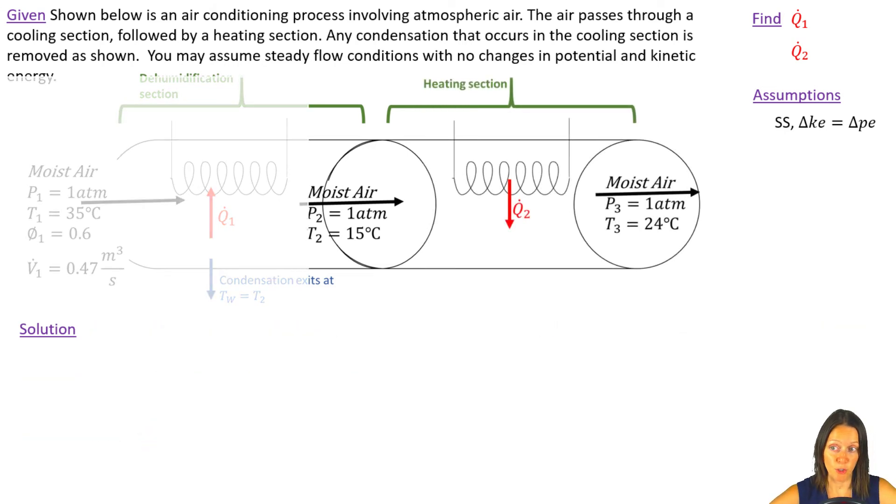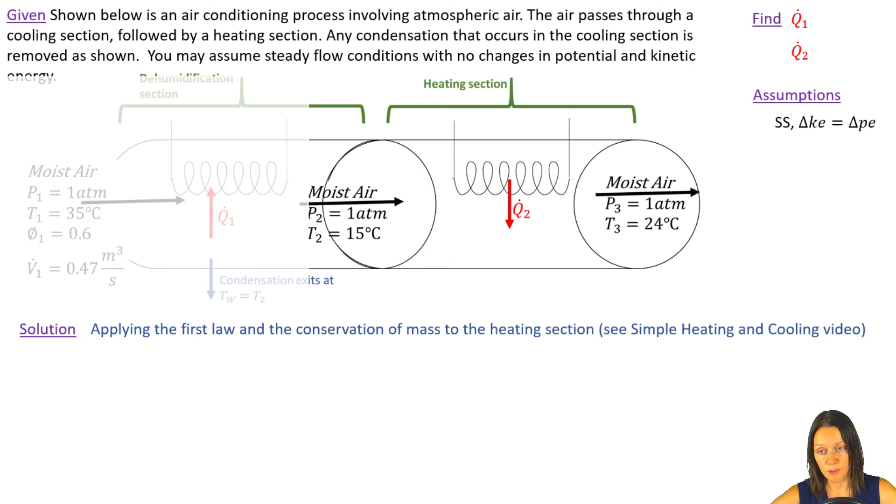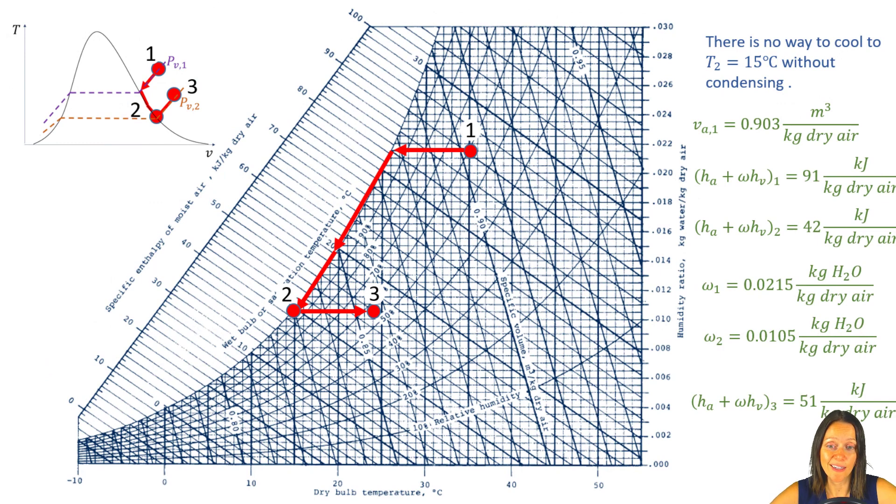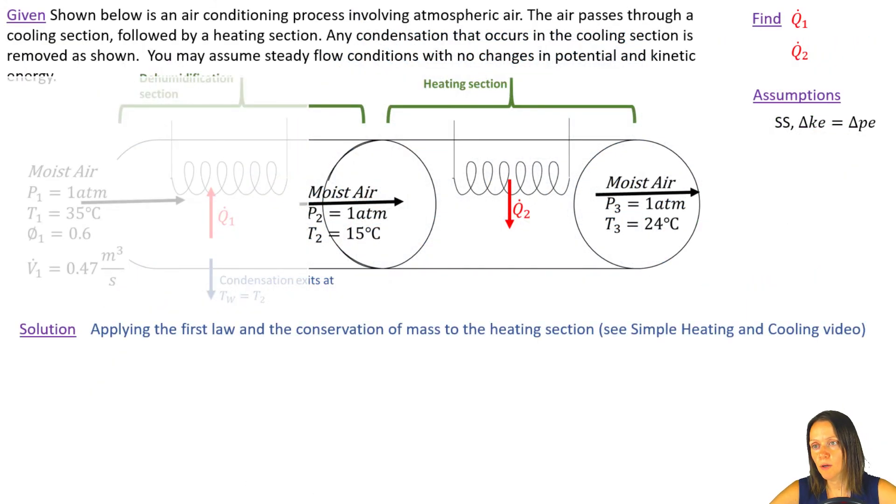Now I'm going to look at the heating section or the simple heating section. If I apply my first law and my conservation of mass, I get this equation right here. I've got things in terms of states three and two. And I know M dot A. I've already calculated that because M dot A is the same from state one to state two to state three. It just moves all the way through. There's no other exiting pathway for the dry air, unlike the water where you've got some of it going out as condensate in the first section. So for Q dot two, the only thing that I really need to get is the specific enthalpy of my moist air at state three, which is 51. If I plug everything in, I get 14.05 kilojoules per second. That makes sense that it's a positive number because I'm heating things up. I'm adding heat to that moist air.